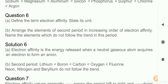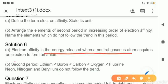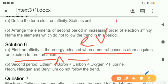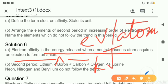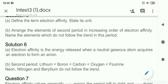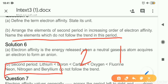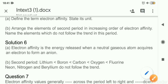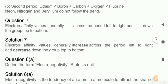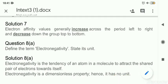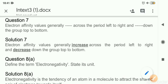Question 6: Define electron affinity and state its unit. The definition is word for word from the textbook. The unit is electron volts per atom; the SI unit is kilojoules per mole. Part b: arrange elements in increasing order of electron affinity and name elements that do not follow the trend. In the second period, certain elements are exceptions — they will not follow the regular order of electron affinity. Question 7 is a fill-up: across the period, electron affinity is increasing; down the group, it is decreasing.